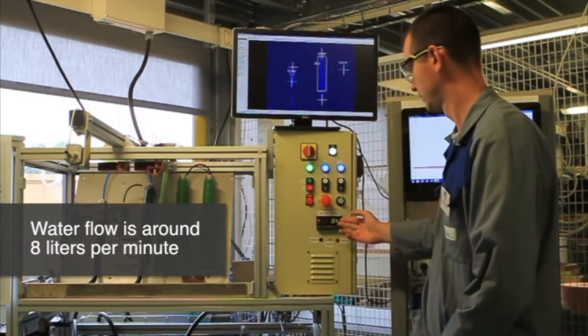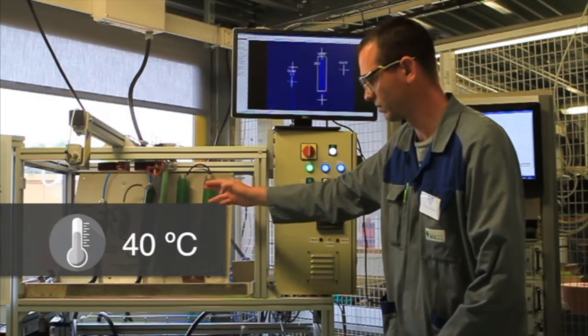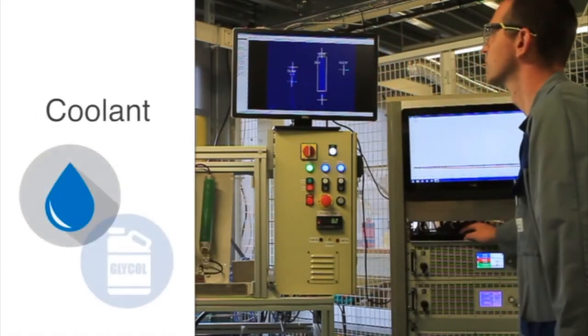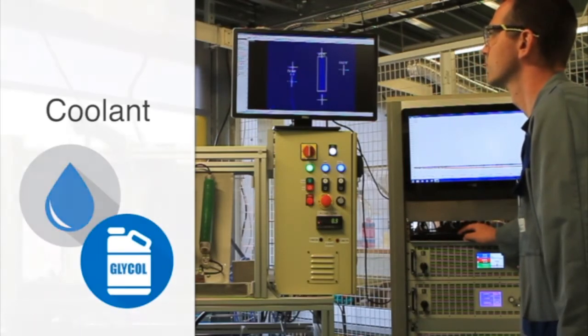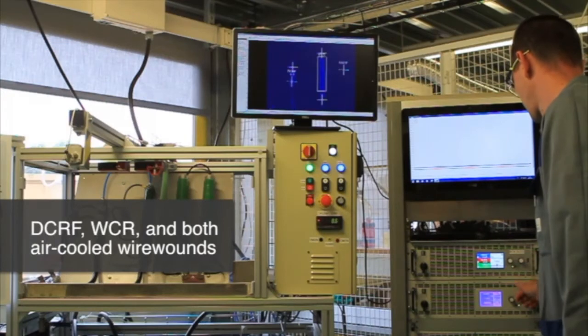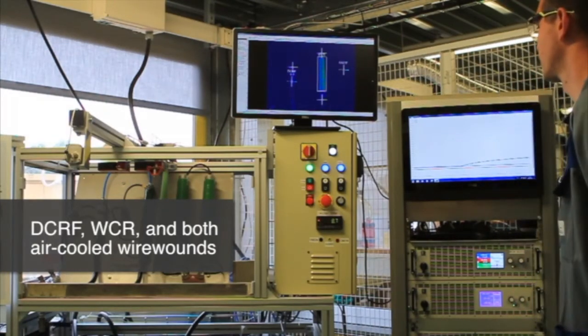The water flow is set up at around 8 litres per minute and 40 degrees C for the DCRF and WCR. The coolant is a mixture of deionised water and 40% glycol. We will now apply the same power 1500 watts on the DCRF, on the WCR and on both air cooled wire wound.